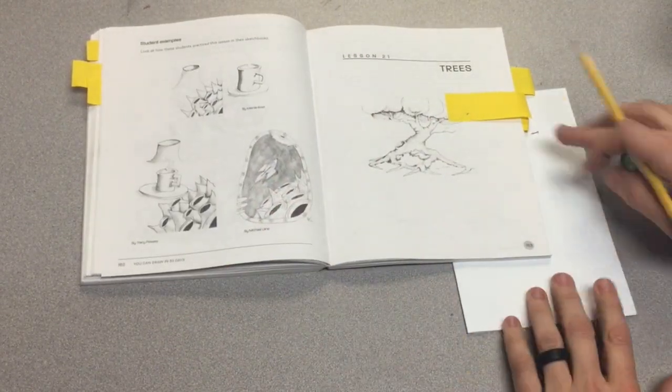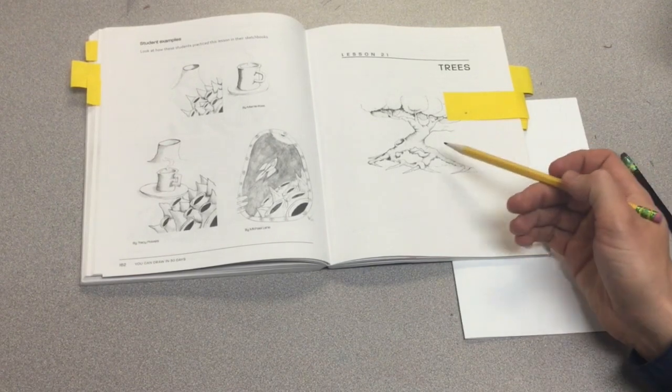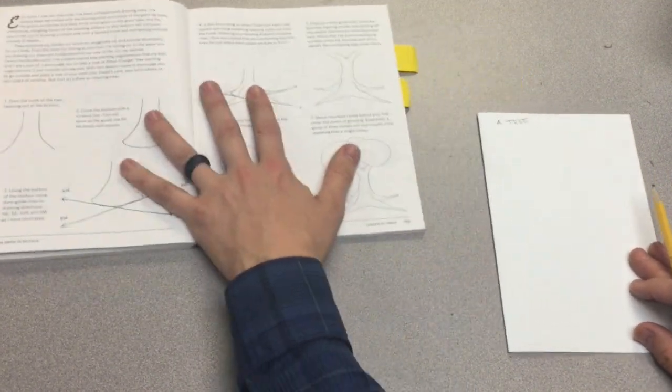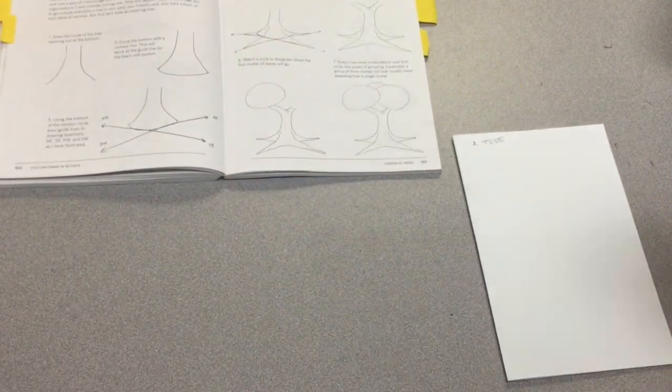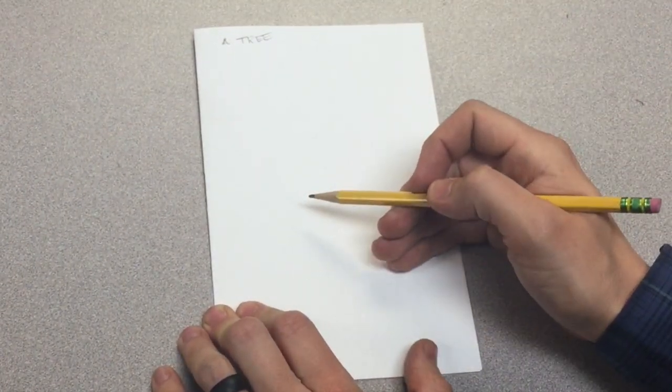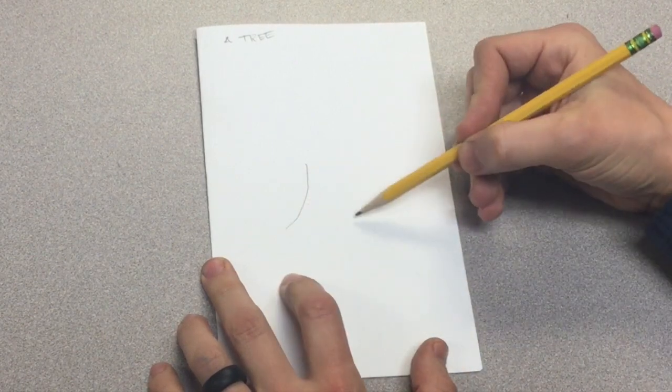Lesson 21 in this book is all about drawing trees. That's a little more complex than the one we'll create right now. Steps are in front of me. Step one is that we will draw the trunk of the tree, and it will taper out at the bottom.